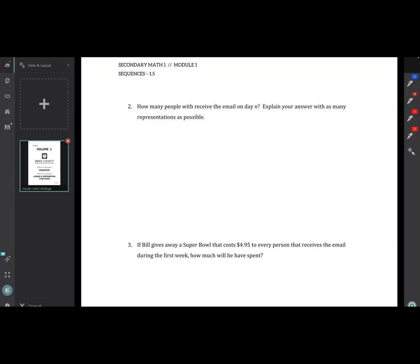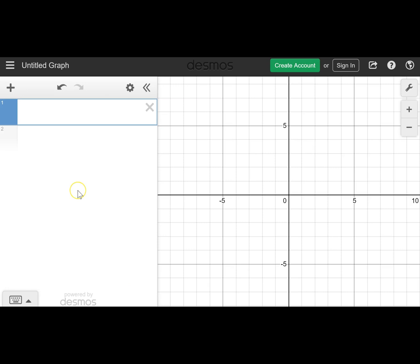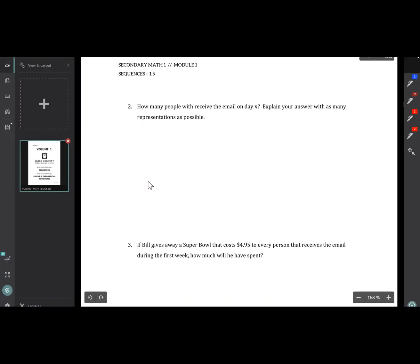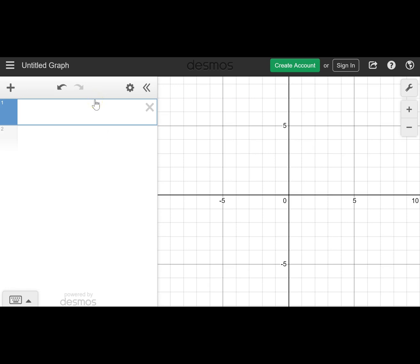If we look back at the wording of problem two, it asks us to explain our answer with as many representations as possible. And we've already created a table, a recursive rule, and an explicit rule. So the next logical thing to do would be to make a graph. And I've pulled up desmos.com in order to enable us to do that.